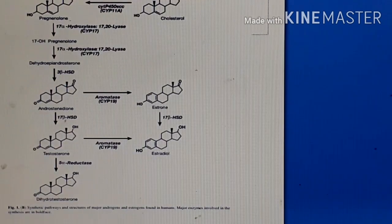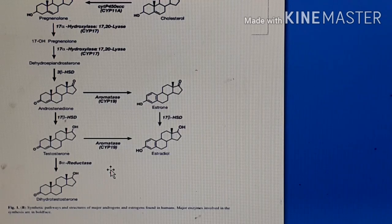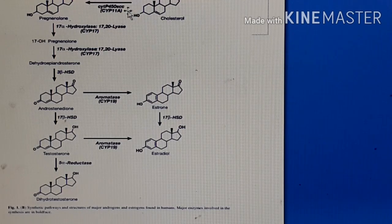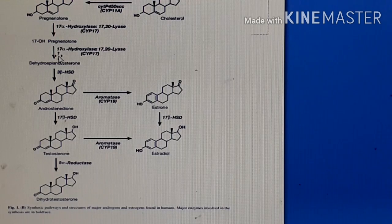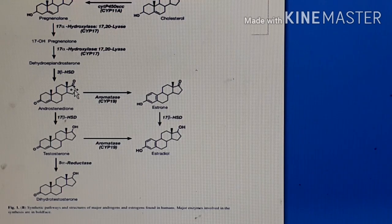Next we have the biosynthesis of estrogens and androgens. The precursor molecule is again cholesterol, and the cytochrome P450 system enzymes are involved. This reaction forms pregnenolone. Pregnenolone is then hydroxylated at position number 17, forming dehydroepiandrosterone (DHEA).